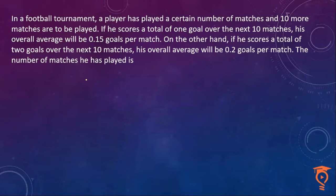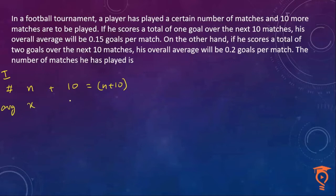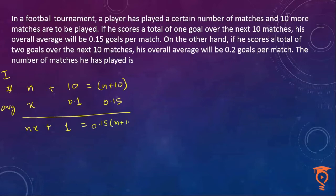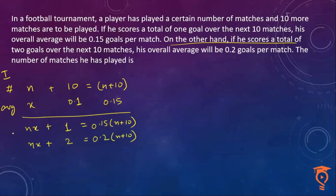I'm going to solve this question using three methods. The first one is the equation method. Let n be the number of matches initially, and 10 matches are yet to be played, giving a total. The average here is 0.1. When the overall number of goals average becomes 0.15, we make an equation: n×x + 1 goal = 0.15 times (n + 10). Similarly, for the second case: n×x + 2 goals = 0.2 times (n + 10).